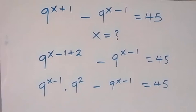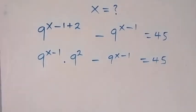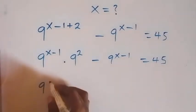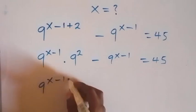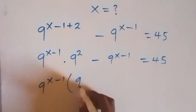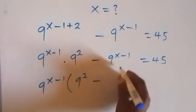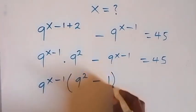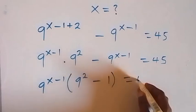Then, what we have here, we have 9 raised to power x minus 1 common. And we can factor that out. And this will be 9 raised to power x minus 1 into bracket 9 squared minus 1 left here. Then equals to 45.